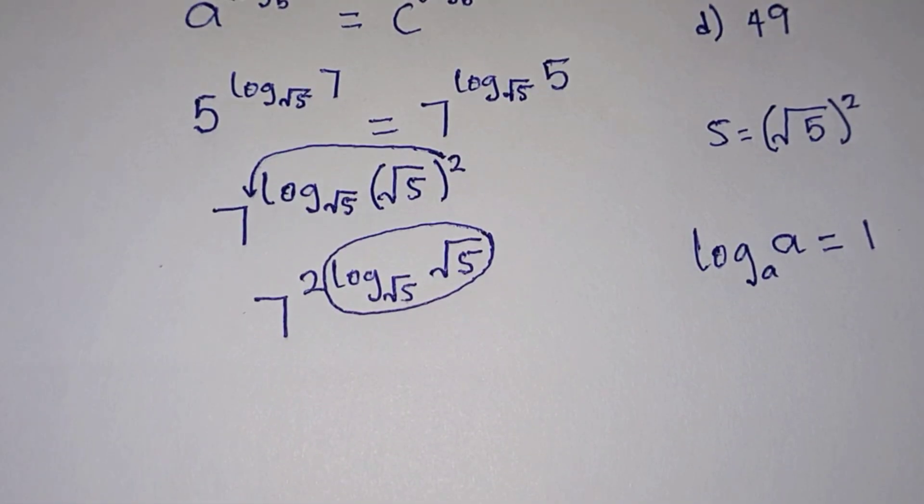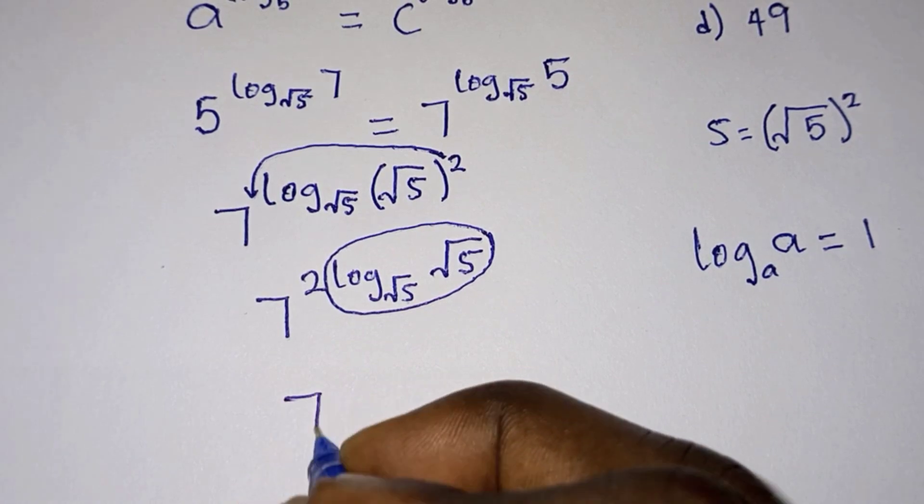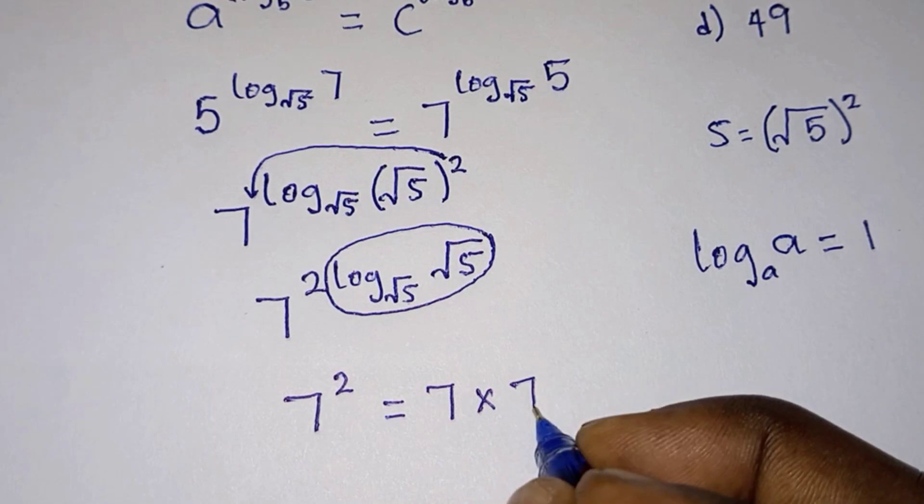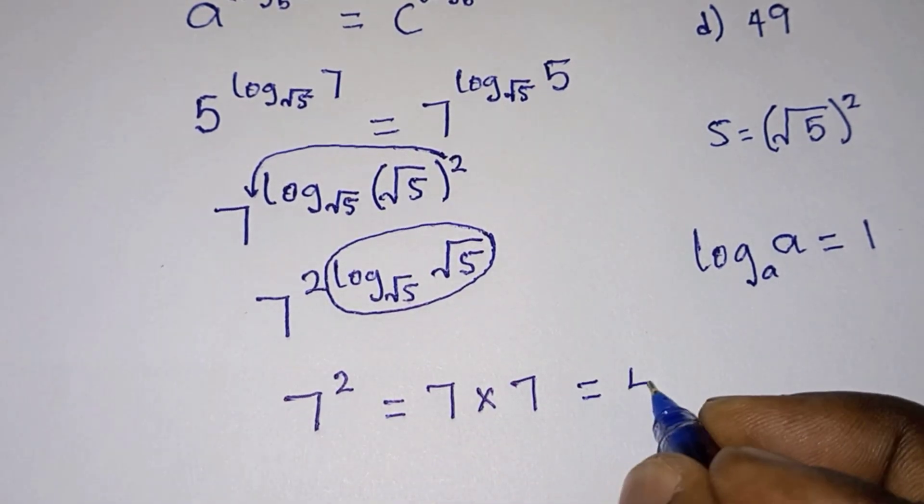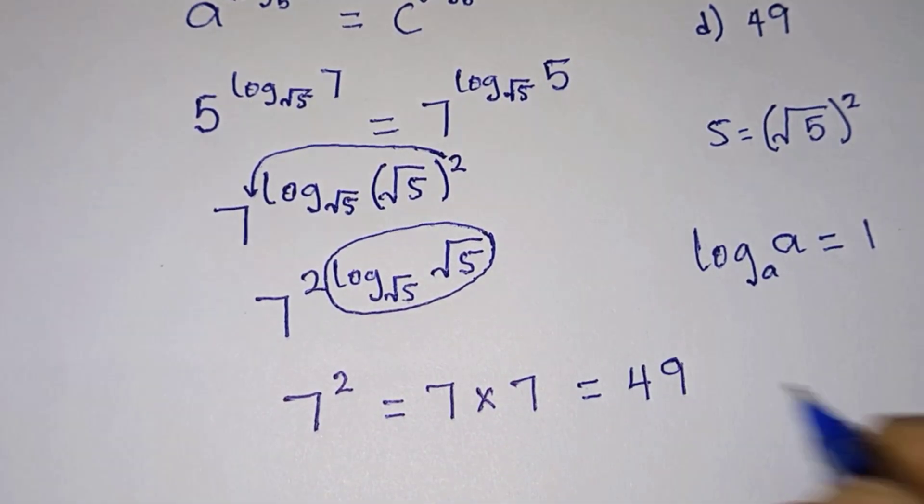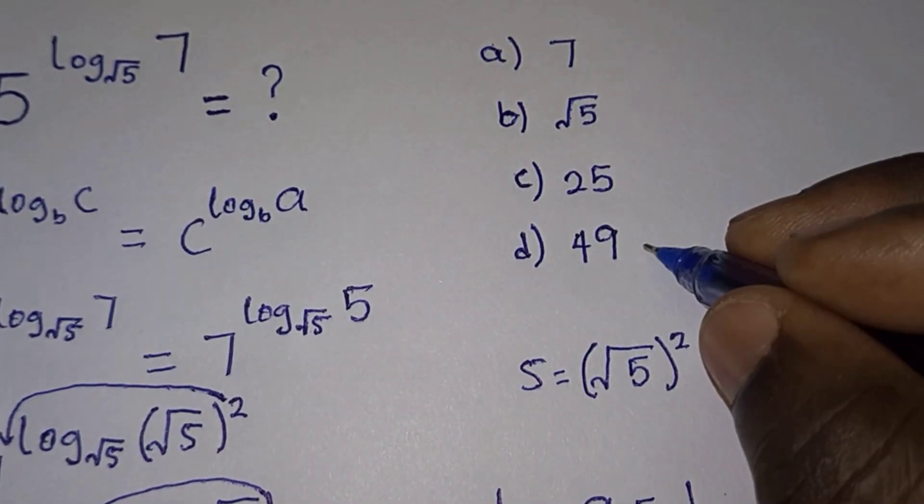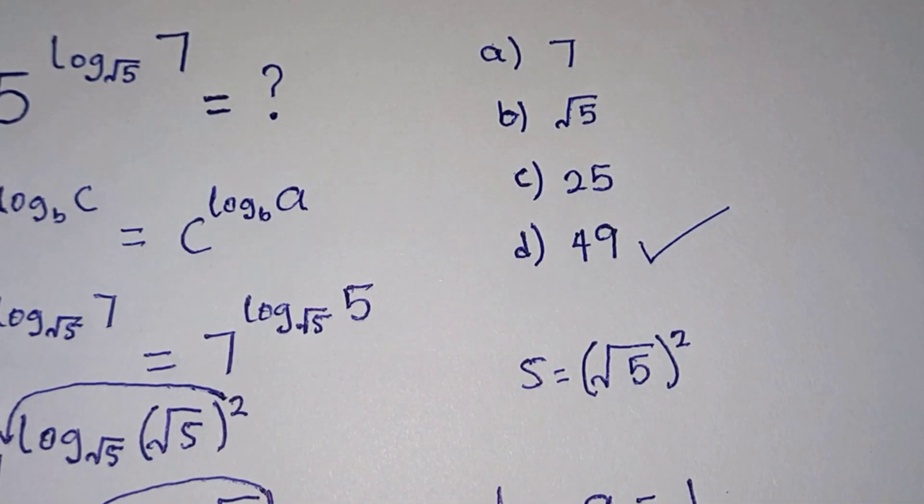So we are left with 7 squared, which is the same as 7 times 7, and this equals 49. We have 49 in the options - yes, we have it as option d.